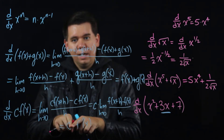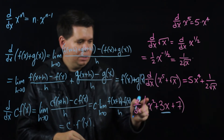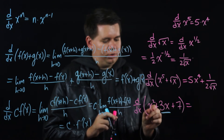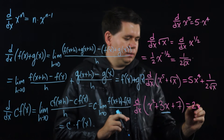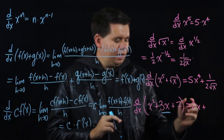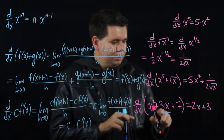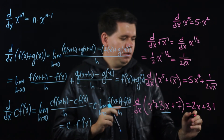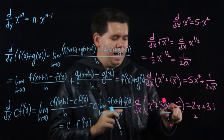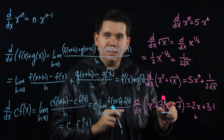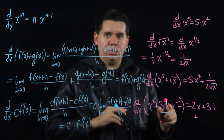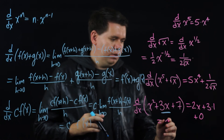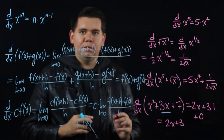So when calculating the derivative of a constant times a function, you leave the constant the same and calculate the derivative of the function. For x squared plus 3x plus 7: the derivative of the first piece is 2x; plus you leave the constant 3 the same and multiply by the derivative of x, which is just 1; plus the derivative of the constant 7, which is 0 since constant functions are flat. That leaves you with 2x plus 3.